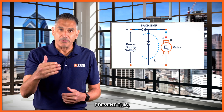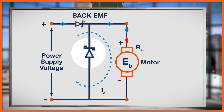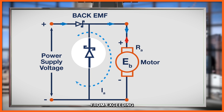So to prevent this, we can apply a diode across the output like this. This diode will forward conduct when the load energy dissipates and it will prevent the voltage from exceeding 0.7 volts. We also commonly refer to this as a freewheel diode.